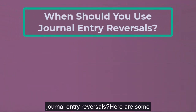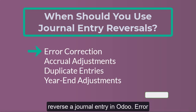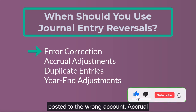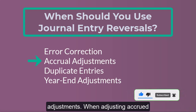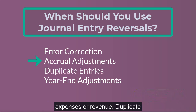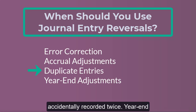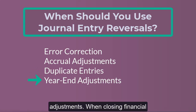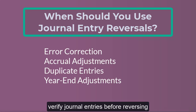When should you use journal entry reversals? Here are some common cases: Error correction — if an incorrect amount was posted to the wrong account. Accrual adjustments — when adjusting accrued expenses or revenue. Duplicate entries — if a transaction was accidentally recorded twice. Year-end adjustments — when closing financial statements. Pro tip: always verify journal entries before reversing to avoid unnecessary adjustments.